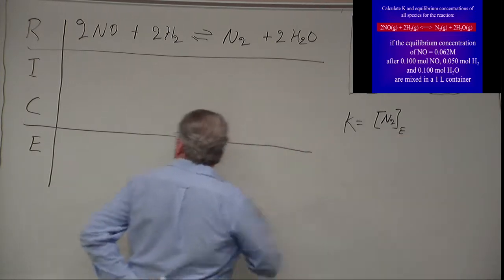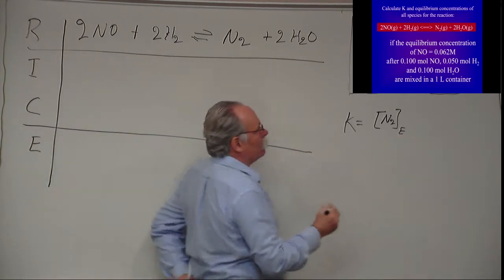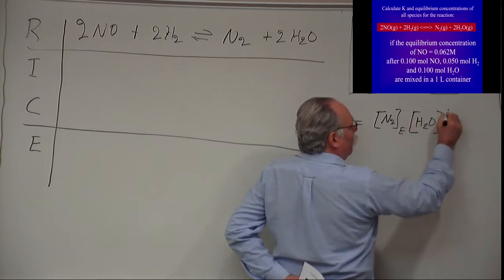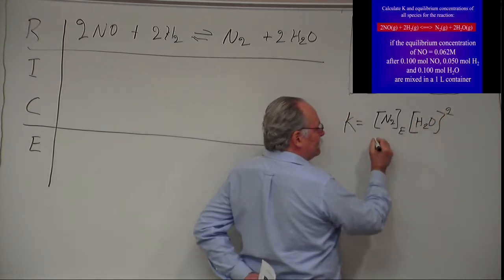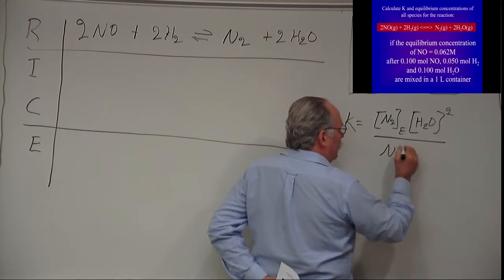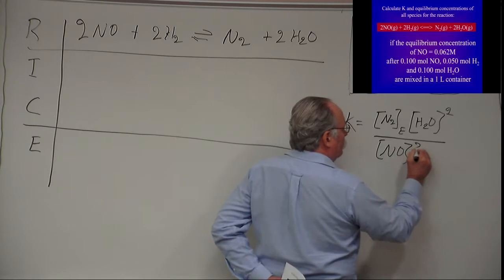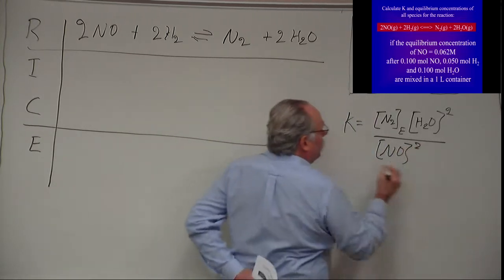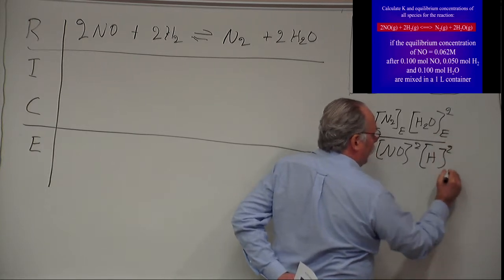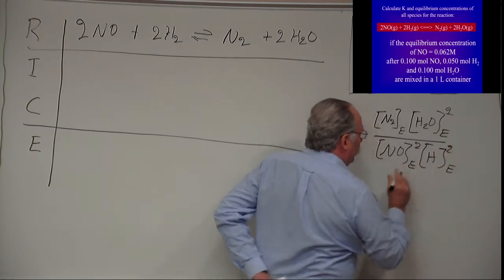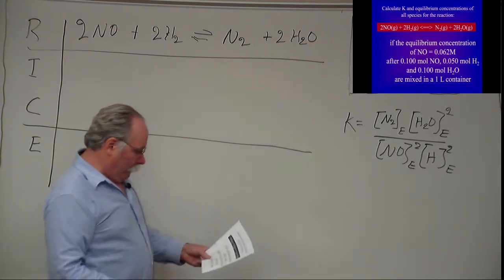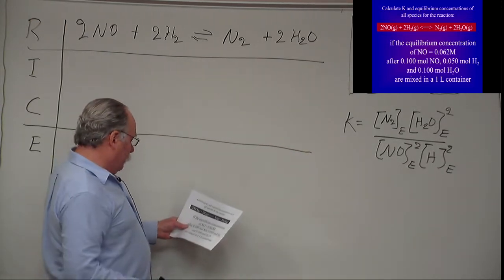And what needs to be understood is this is the value at equilibrium once the reaction is over, times the H2O squared, and because it's a gas it's in the equilibrium constant expression, divided by the NO squared because its coefficient is 2, times the H2 squared, and what needs to be emphasized is these values are at equilibrium.